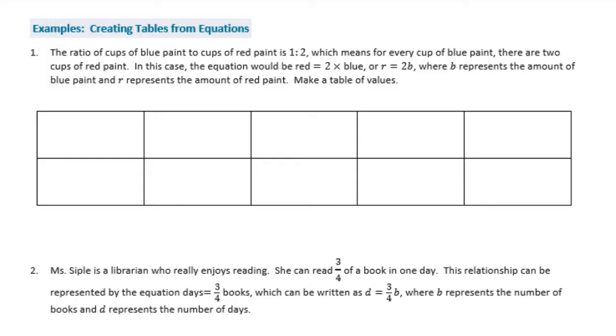Example 1. The ratio of cups of blue paint to cups of red paint is 1 to 2, which means for every cup of blue paint, there are 2 cups of red paint. In this case, the equation would be red equals 2 times blue, or r equals 2b, where b represents the amount of blue paint, and r represents the amount of red paint. Make a table of the values.